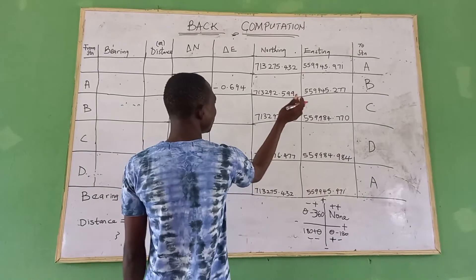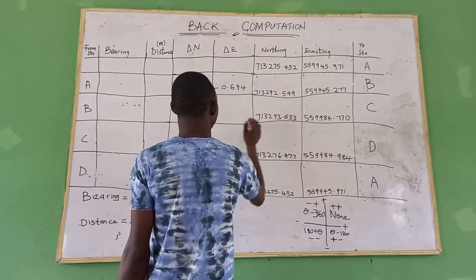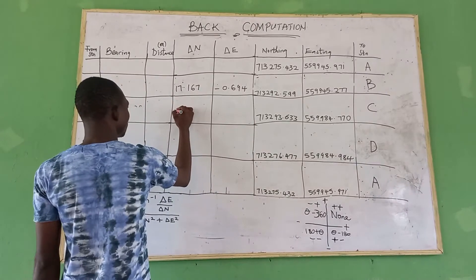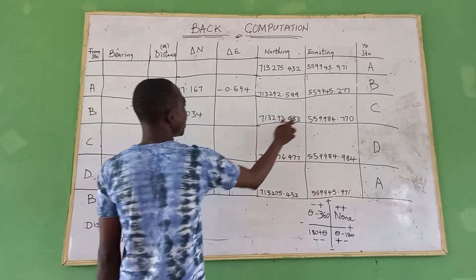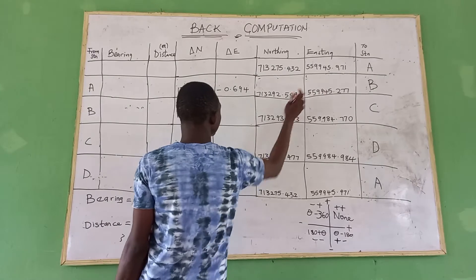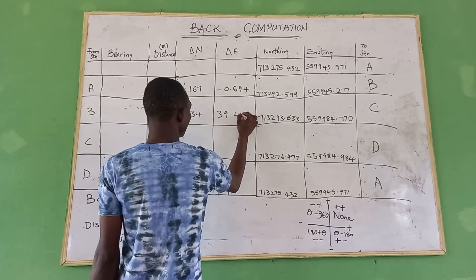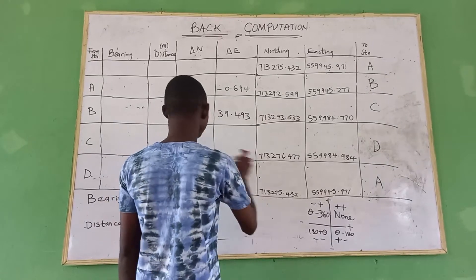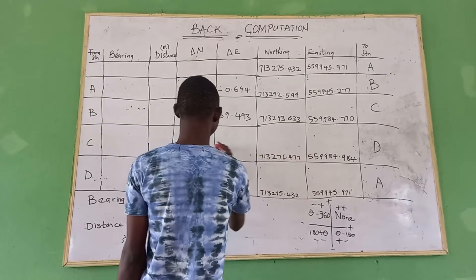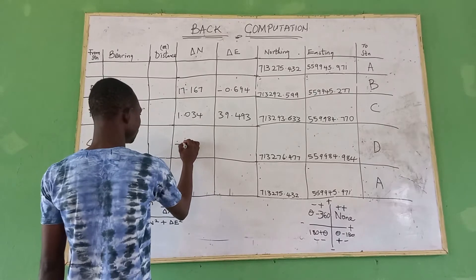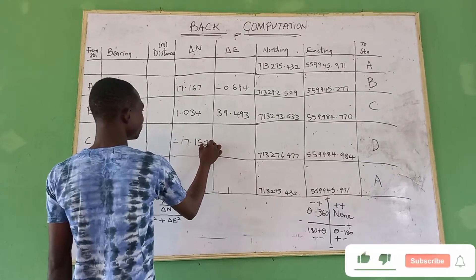For the next station B, we subtract to get 1.034. For station C, we subtract to get minus 17.157 and minus 18.157.